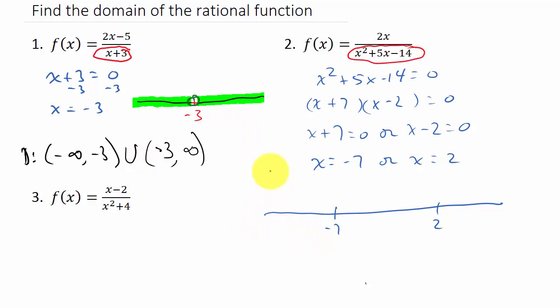My domain is the entire number line, and we're going to have an open circle at negative 7 and an open circle at 2.